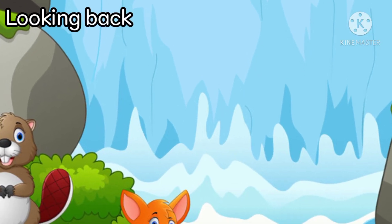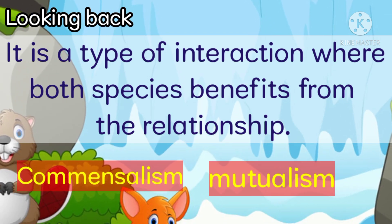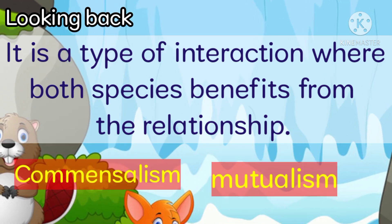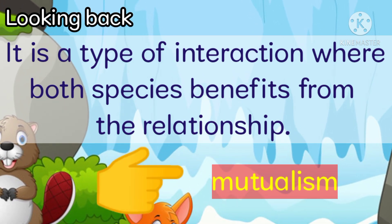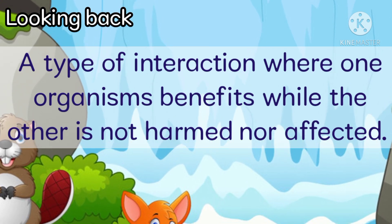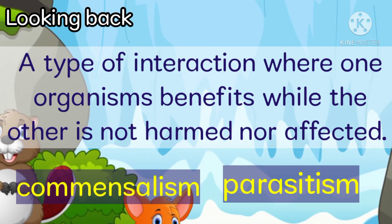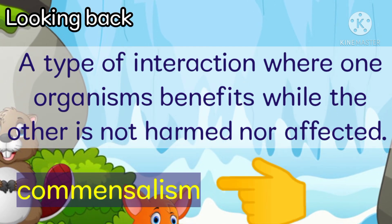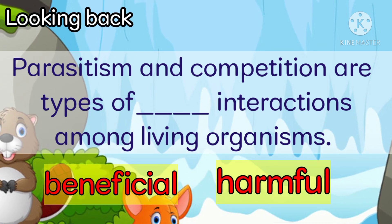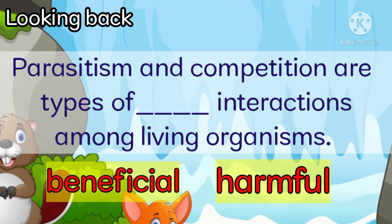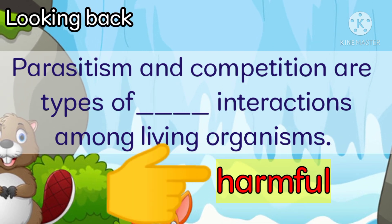For our short review, answer the questions carefully. It is a type of interaction where both species benefit from their relationship. Is it commensalism or mutualism? Very good — mutualism! Next, it is a type of interaction when one organism benefits while the other is not harmed nor affected — commensalism. For the last question, parasitism and competition are types of harmful interactions among living organisms.